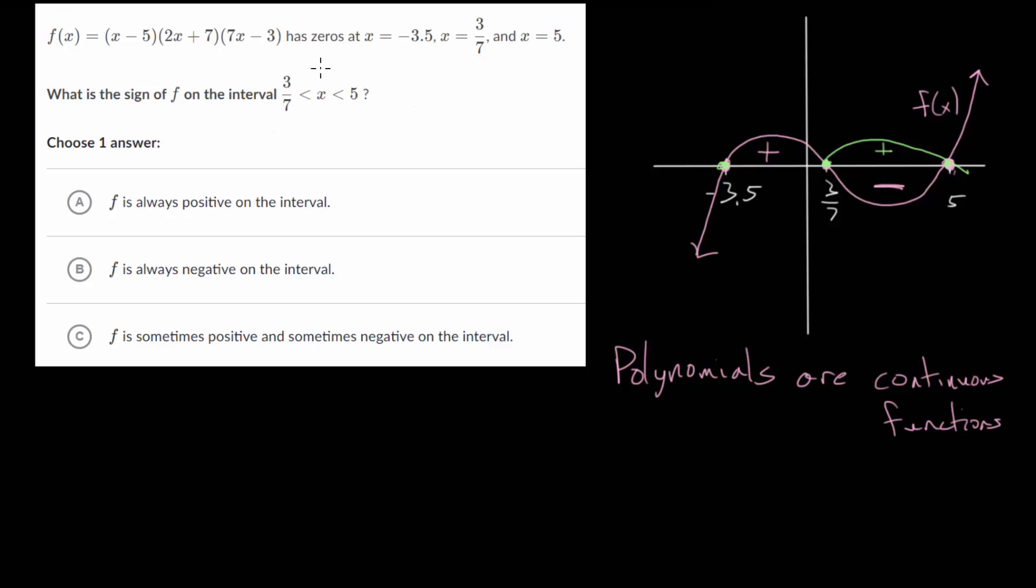We don't want to pick the endpoints in the interval because if we plug in 3/7 or 5 the function is just equal to zero. So it's not going to be positive or negative. So we have to pick some random value between 3/7 and 5 and plug it in. If it's a positive number then all the values on that interval are going to be positive. If it's a negative number then everything on that interval will be negative or its y value will be negative.